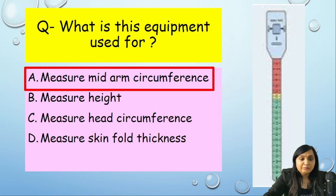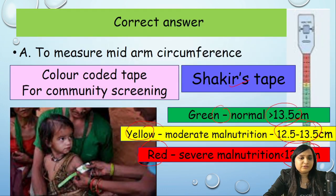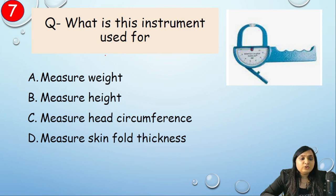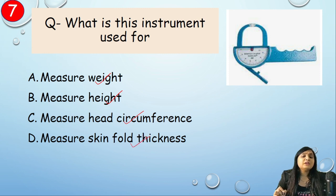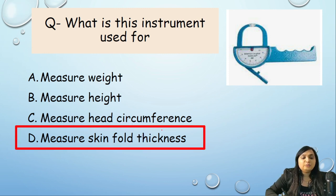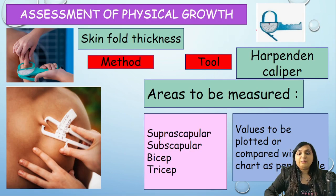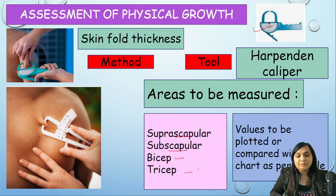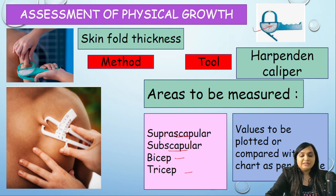What is this instrument used for — measure weight, measure height, measure head circumference, or measurement of skinfold thickness? Correct answer is option D, measurement of skinfold thickness. This is the Harpenden caliper, used to measure skinfold thickness. The areas measured are suprascapular, subscapular, bicep, and tricep. Values are plotted and compared with a chart as per centile.